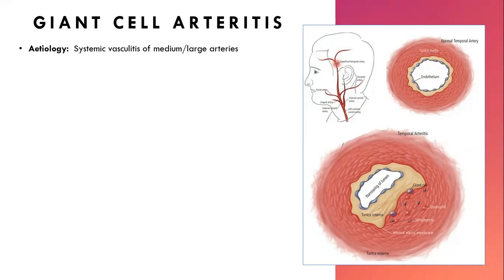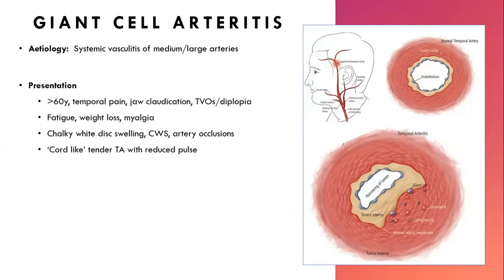GCA is a systemic vasculitis of medium and large arteries in patients over 60. The classic symptoms include jaw claudication — patients may describe discomfort when chewing food — and scalp tenderness, which you elicit by asking if it's been uncomfortable to brush or wash their hair. They can get pain going down the neck as well. Ask about any new neck or shoulder pain, along with TVOs and diplopia. Systemic symptoms include fatigue and weight loss.